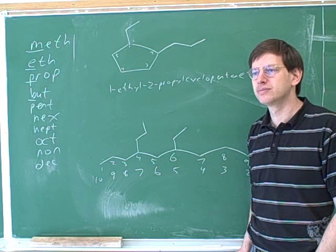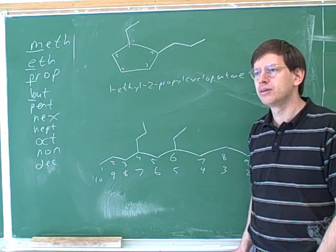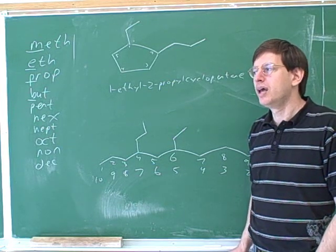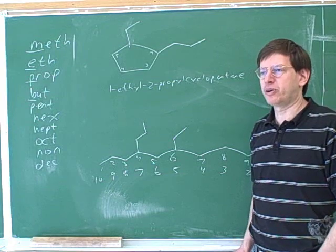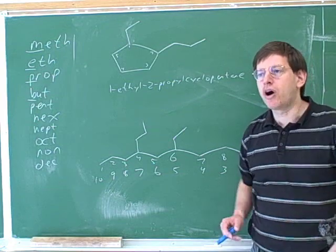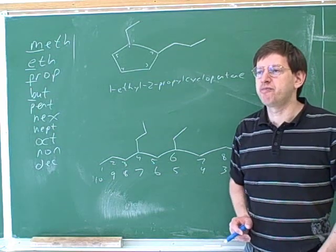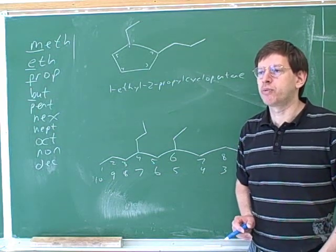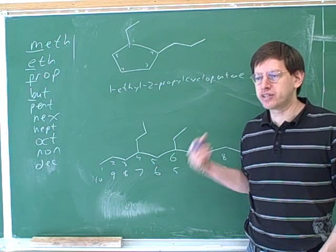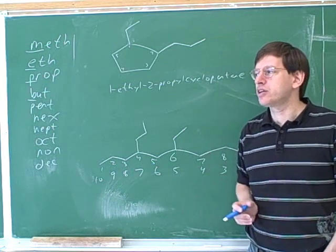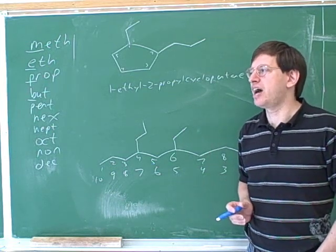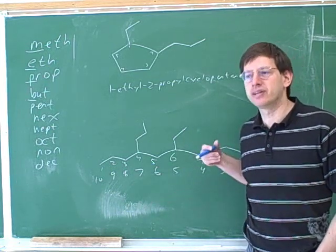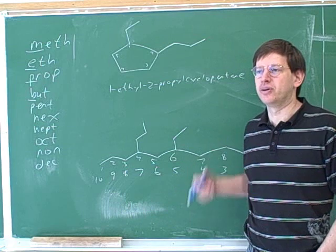So we don't need alphabetical ordering to decide where to start the numbers. If you wanted to put it in alphabetical order, could you put it in alphabetical order with the correct numbers? We certainly have to put them in alphabetical order — we always use alphabetical ordering for what order we list the substituents. The question is whether we should use alphabetical order to decide how to number the molecule.